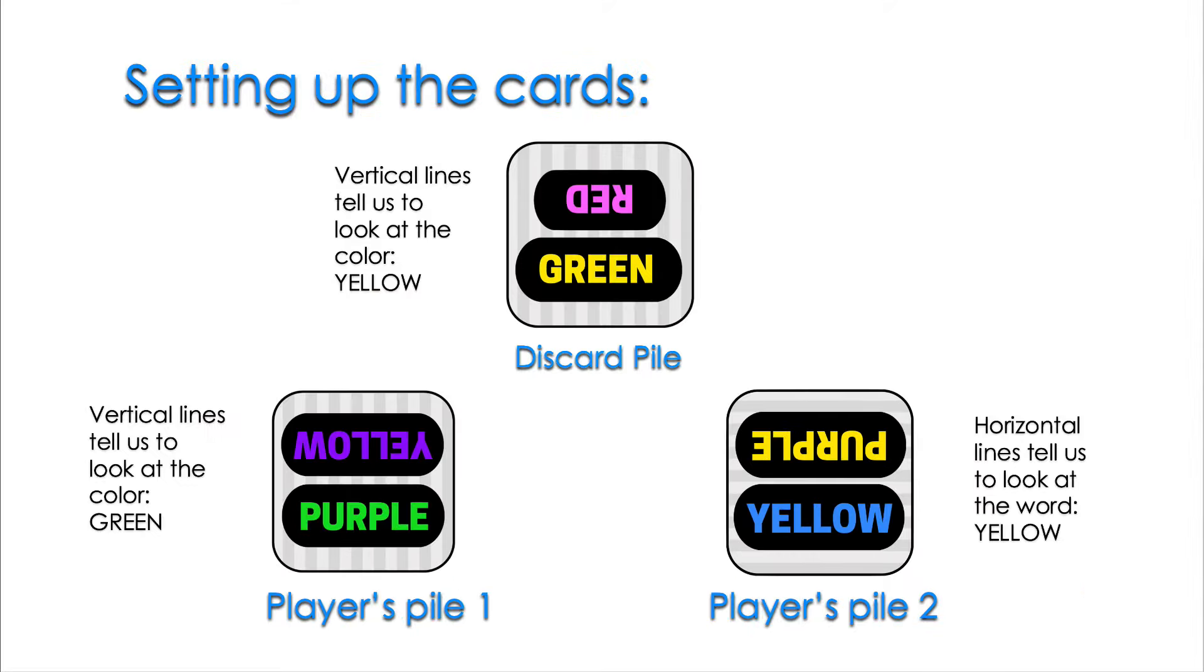And here is how to play. Shuffle the cards evenly amongst the players, and place a single card on the table face up. This is the discard pile. The cards are held in each player's hands face down and flipped over onto a player's pile. Each player will have their own player's pile.